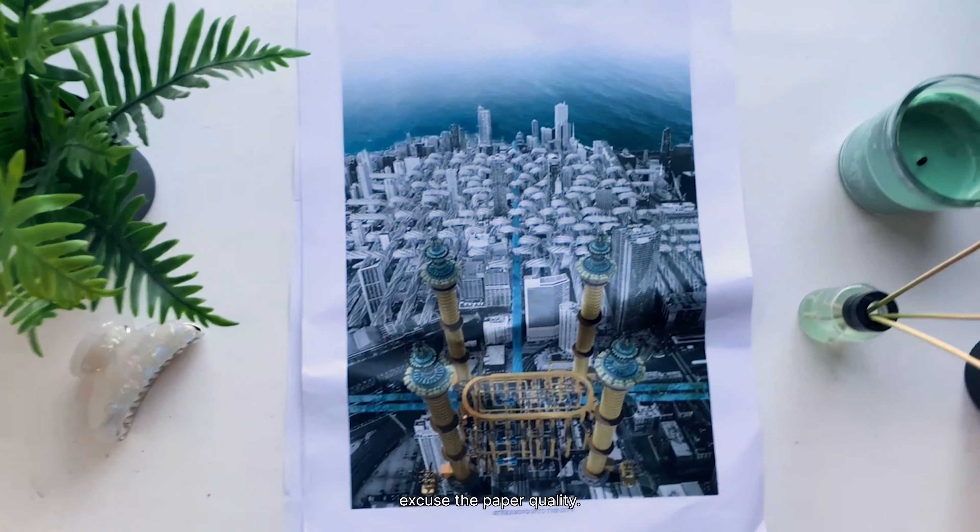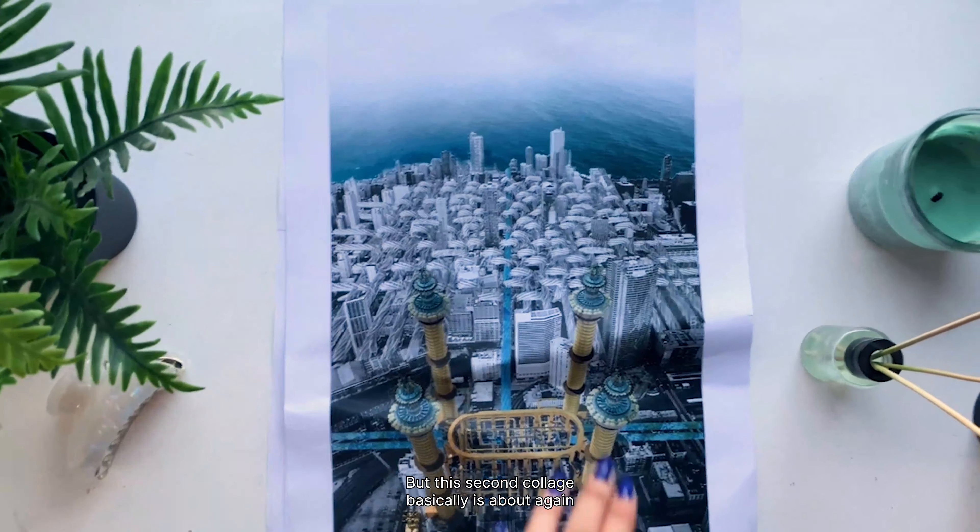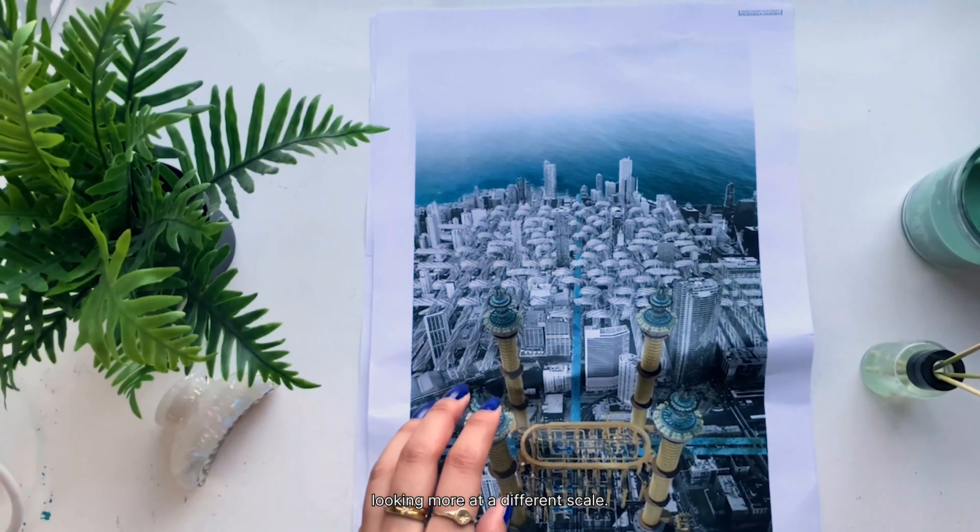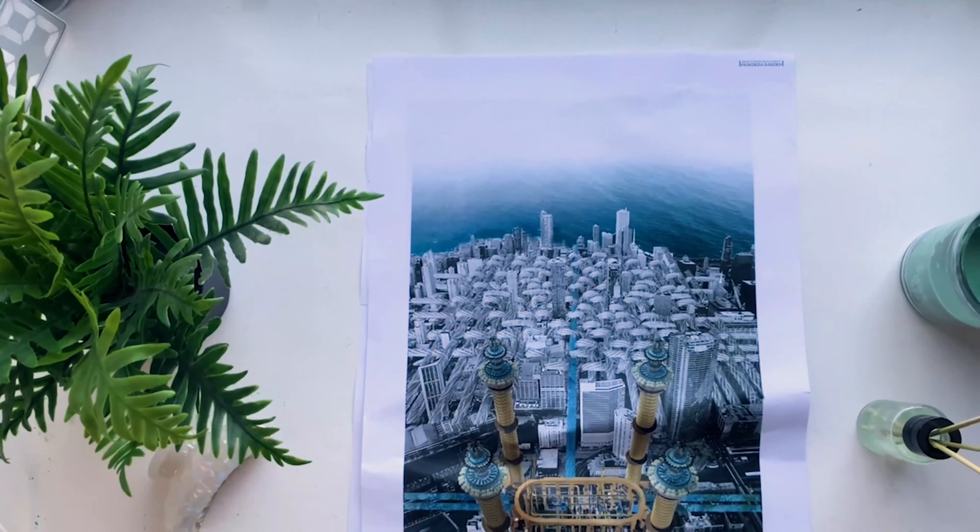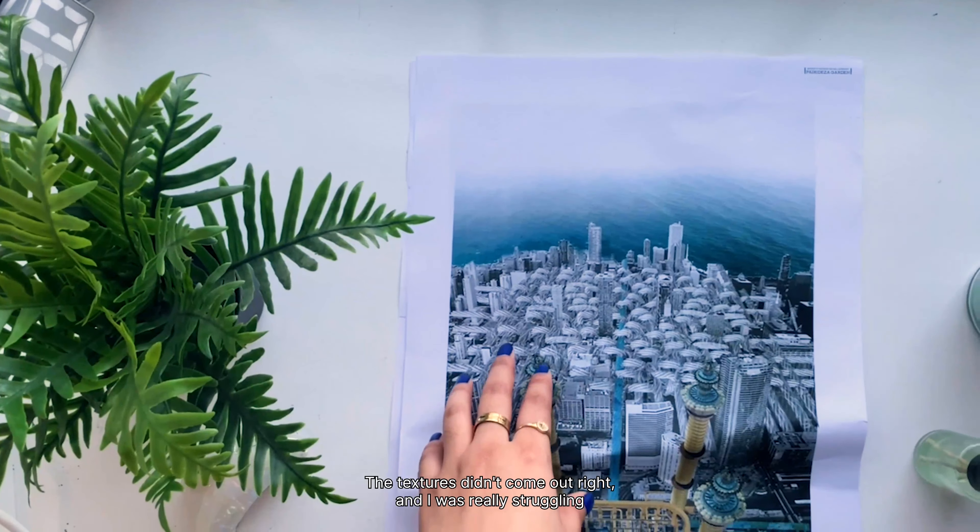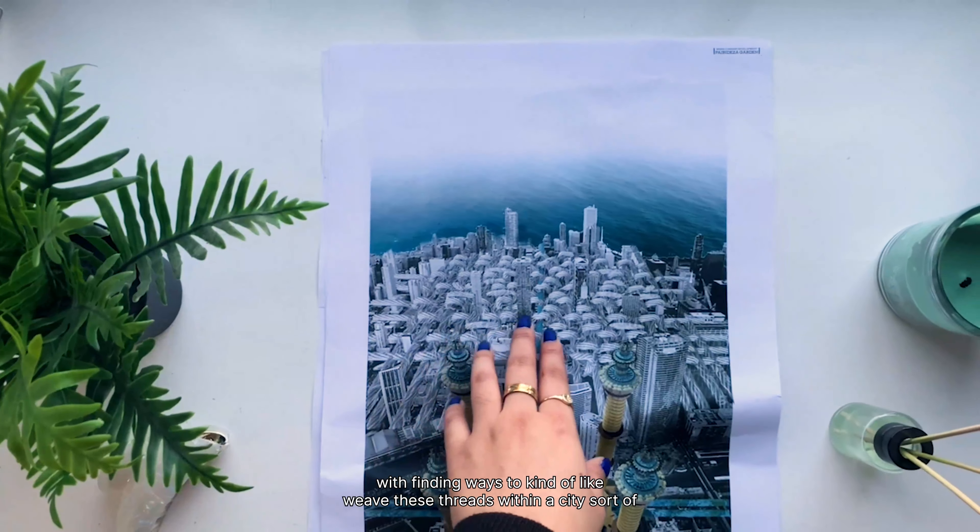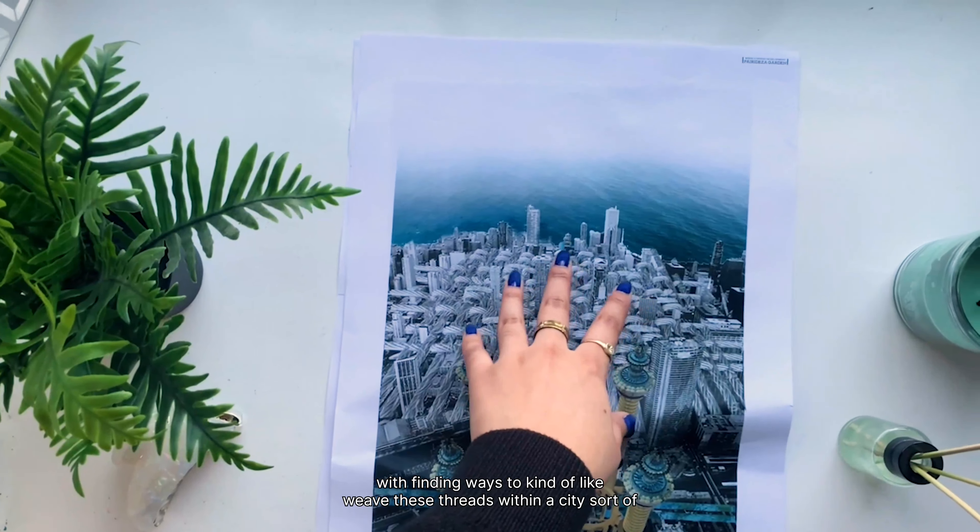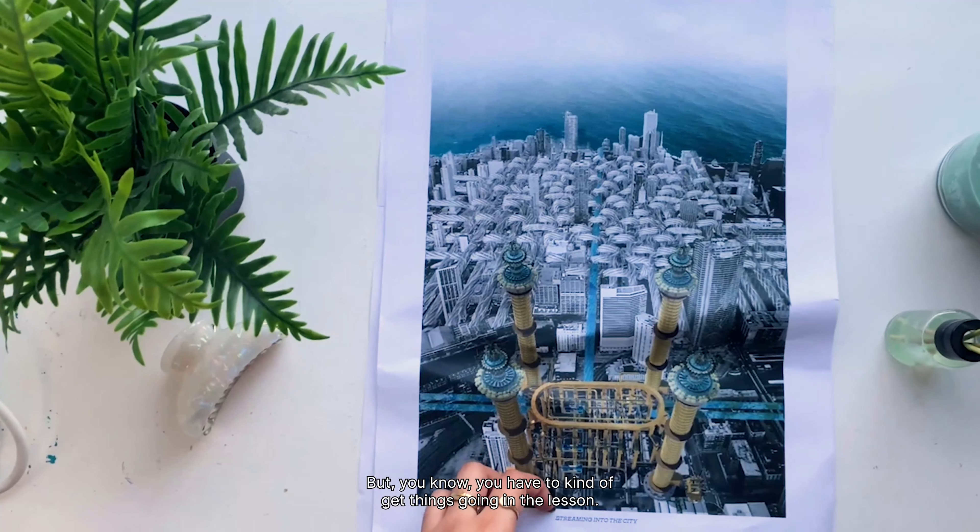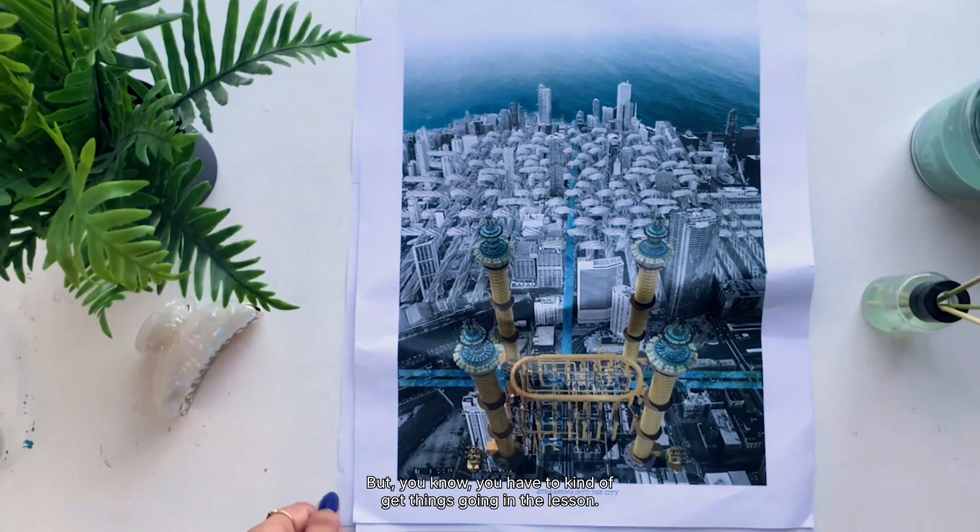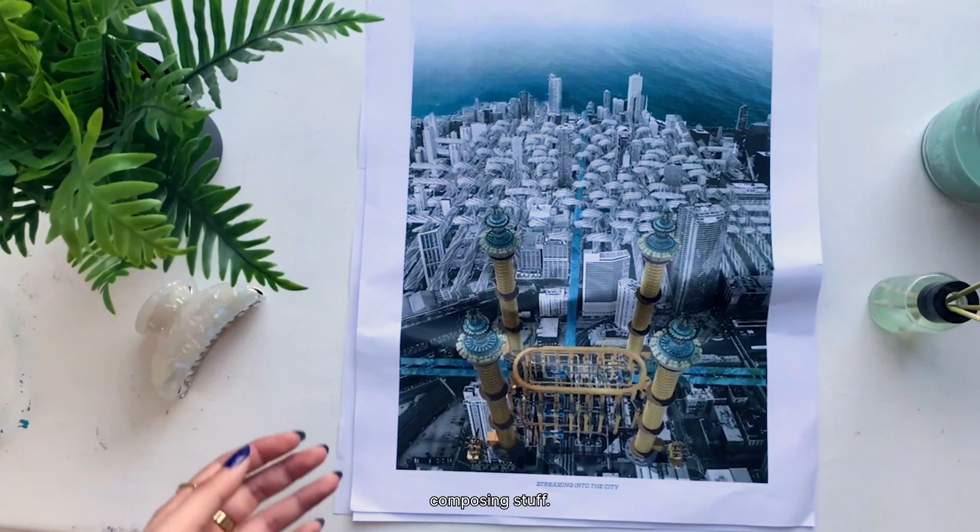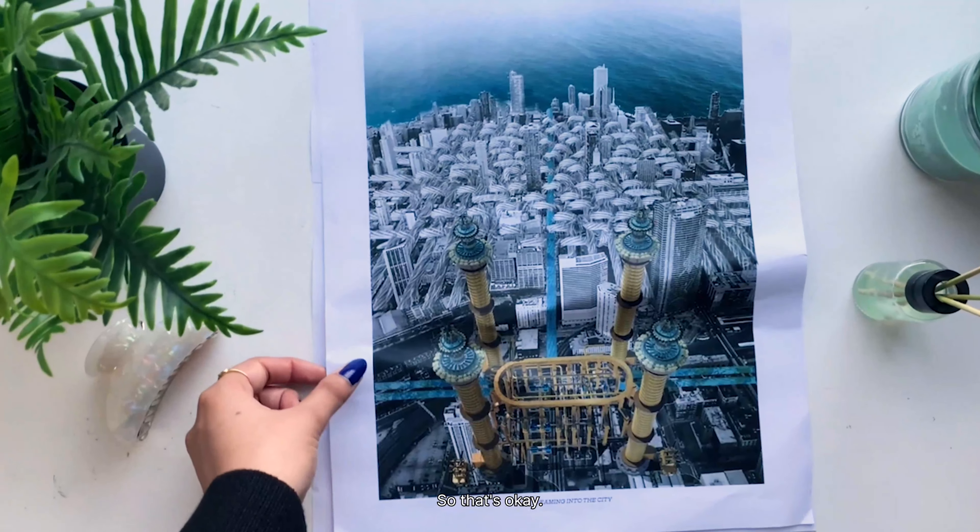Excuse the paper quality, but this second collage is basically looking at a different scale. This didn't really work as well as I wanted it to. The textures didn't come up right and I was really struggling with finding ways to weave these threads within a city structure. But you know, you have to give things a go nonetheless and you learn things along the way too as you're photoshopping and composing stuff, so that's okay.